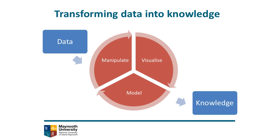By using different techniques, we're able to manipulate the data so that it can be used by, for example, statistical software. We also produce visualizations that will help us understand what the data is telling us. Humans are visual creatures, and as we know, a picture is worth a thousand words. And we can use models to try and understand the underlying processes that are generating all of the data we observe. Statistics and data science allow us to transform data into knowledge.